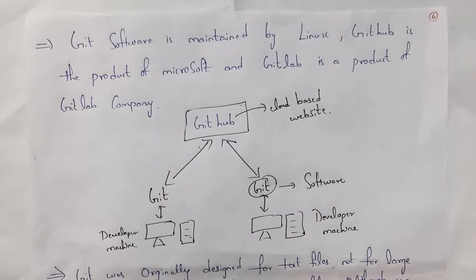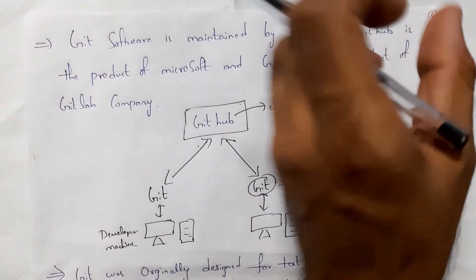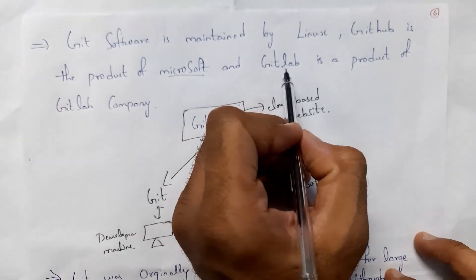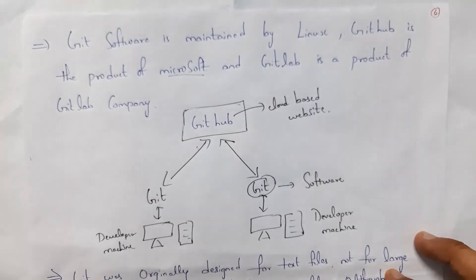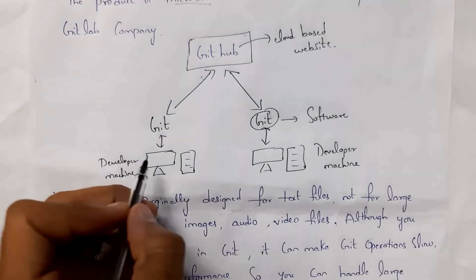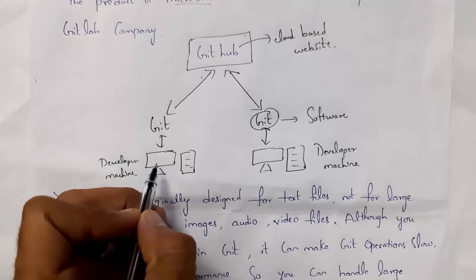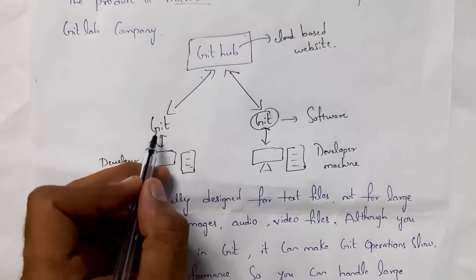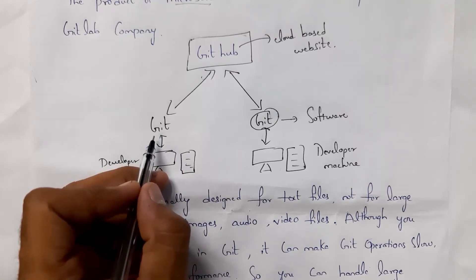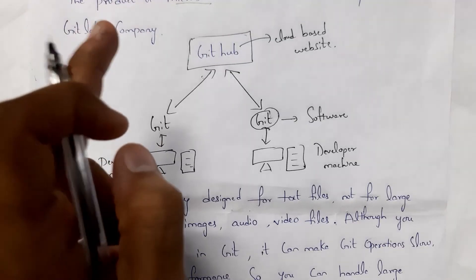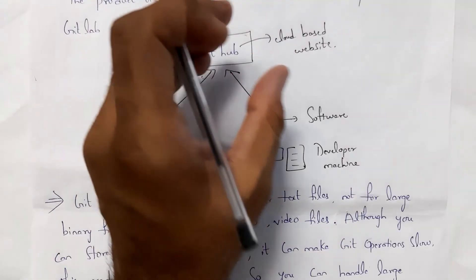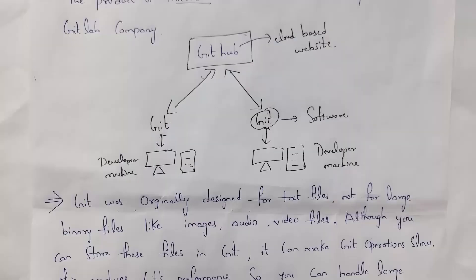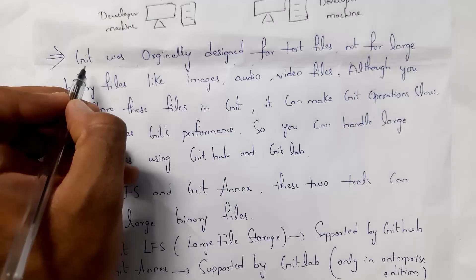Git is software maintained by Linux, whereas GitHub is a product that belongs to Microsoft, and GitLab belongs to the GitLab company. For example, as a developer, when you write code in your system, you first place it in Git software. Only you can access it there. If all remaining employees need to access that code, you place it on GitHub, which is cloud-based. GitHub and GitLab are similar but belong to different companies.